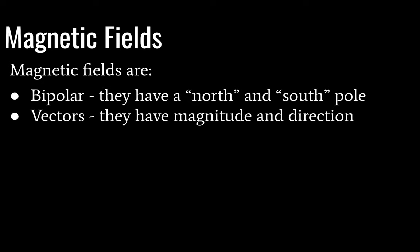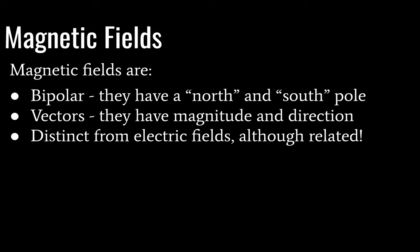Magnetic fields are also vectors, which means they have magnitude and direction. But what it also means is that if you have a couple of them together in proximity to each other, you need to use vector addition to calculate your net magnetic field. Magnetic fields are distinct from electric fields, but definitely related. Thus, the term electromagnetic.